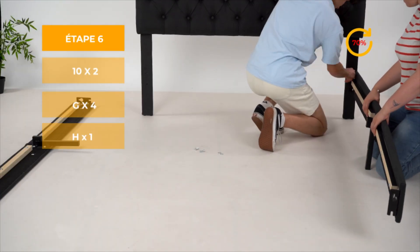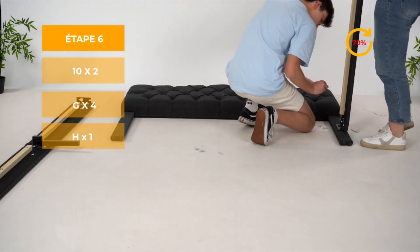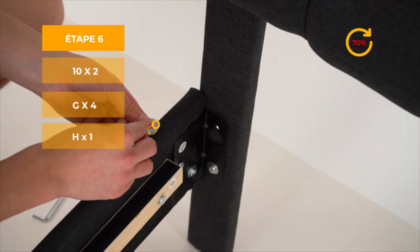Pour l'étape 6, assemblez l'étape 4 avec l'étape 2. Je vous conseille de mettre à plat le lit pour visser et d'être accompagné. Vissez à 70%.